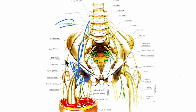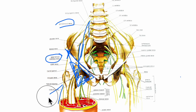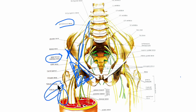The lateral cutaneous nerve of the thigh crosses the lateral angle of the femoral triangle. It runs on the lateral side of the thigh and ends by dividing into anterior and posterior branches, supplying the anterolateral aspect of the thigh and the lateral aspect of the gluteal region respectively.